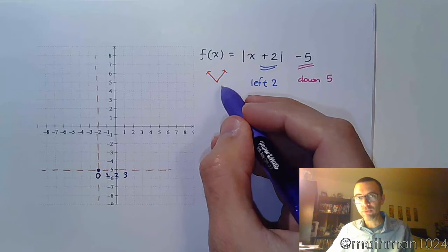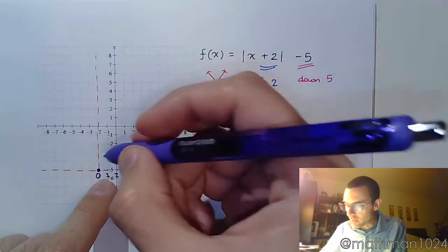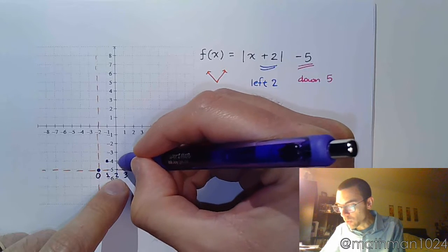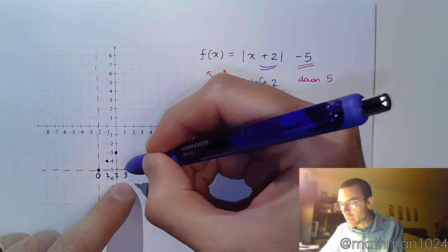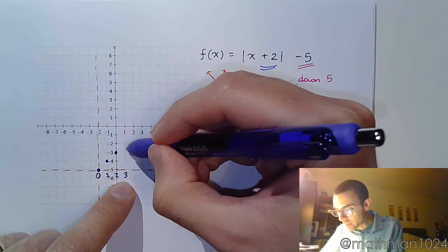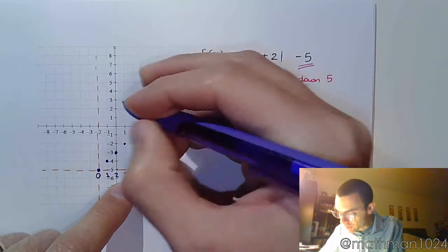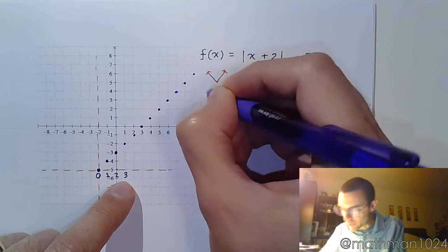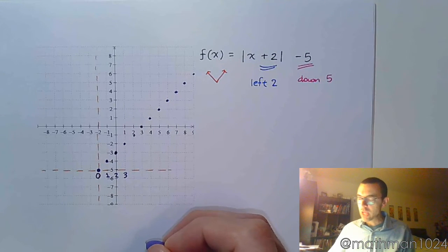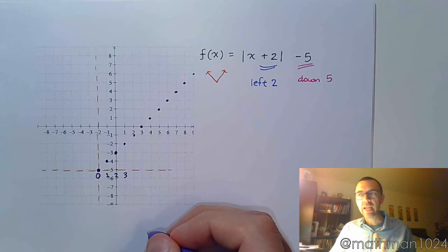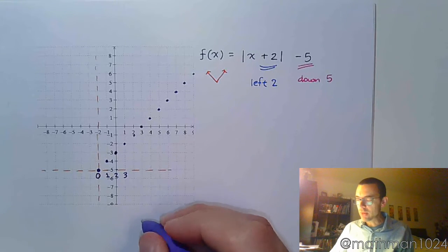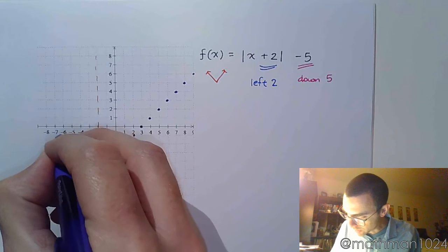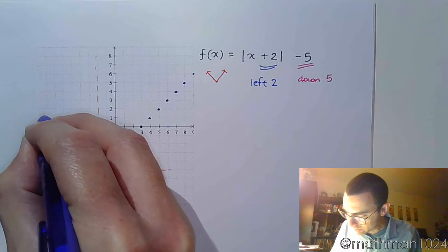So using those absolute value key points, the absolute value of 1 is 1. The absolute value of 2 is 2. So I go up 1, 2. The absolute value of 3 is 3, and so on. So I keep on going to the edge of my graphing window with that shape and with those key points. And we know how this guy is built. He has that line of symmetry going through that vertex, so I can copy these points on the other side, just like that.